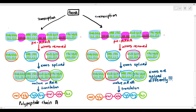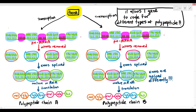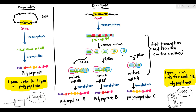The cell did this deliberately so that it can produce two different polypeptide chains — polypeptide chain A and polypeptide chain B. That is the advantage of having introns: by removing them, the cell can rearrange exons to produce different types of polypeptide chains, allowing one gene to code for different polypeptides. This is the advantage eukaryotes have over prokaryotes — from one gene, they can code for different polypeptides, producing many different types of proteins and making them more complex organisms than bacteria.